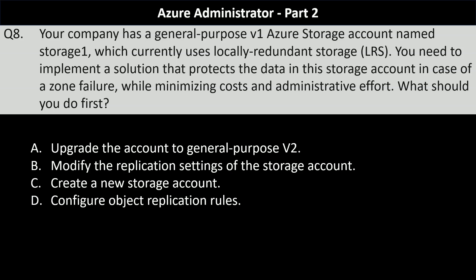Here they are looking for an option which provides redundancy against zonal failures, which is basically geo zone redundant storage. There is only one kind of storage that provides this functionality, which is general purpose v2. So the correct answer is option A — upgrade the account to general purpose v2. We won't choose any option related to replication modification here, as the question also talks about minimizing the cost and administrative effort.